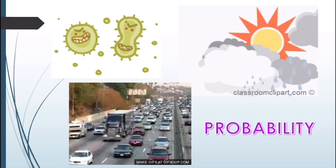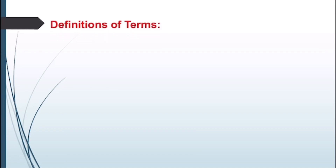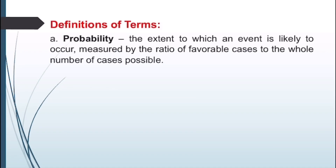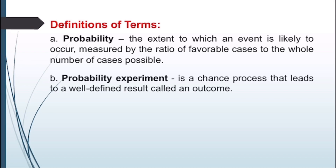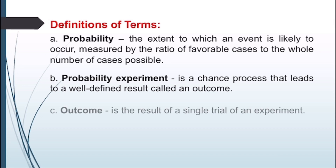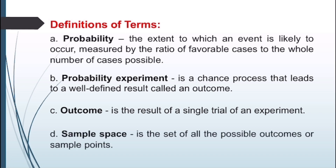Let's define the following terms. Probability is the extent to which an event is likely to occur, measured by the ratio of favorable cases to the whole number of cases possible. A probability experiment is a chance process that leads to well-defined results called an outcome. An outcome is the result of a single trial of an experiment. The sample space is the set of all possible outcomes or sample points.